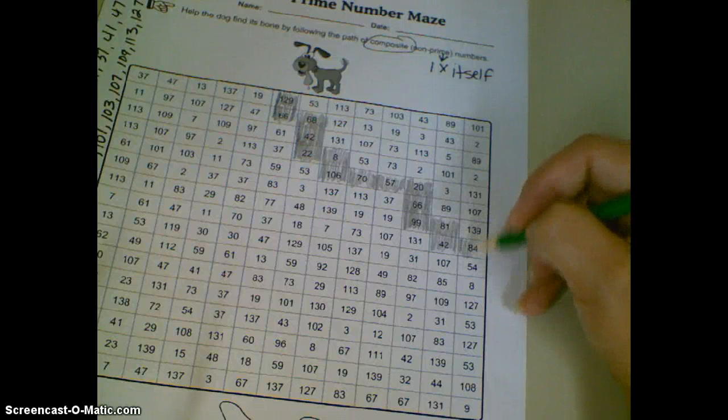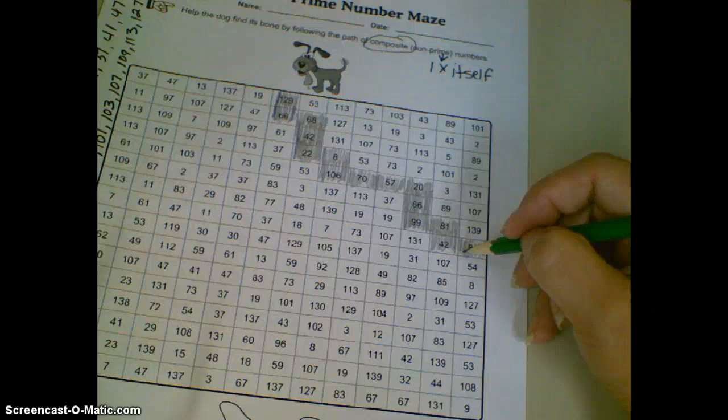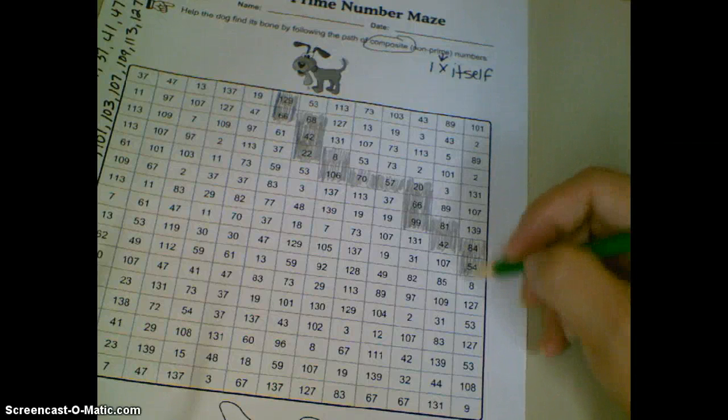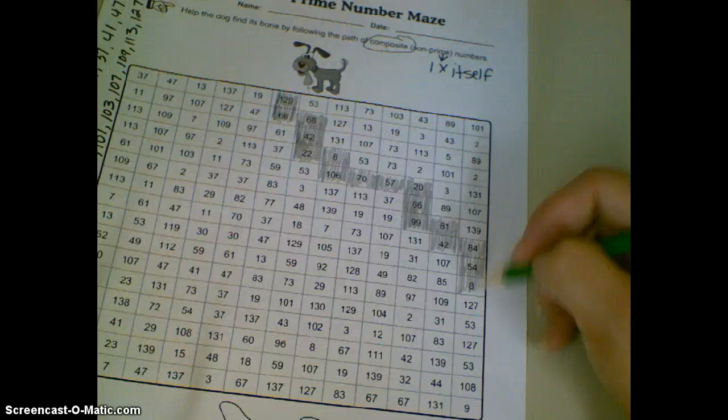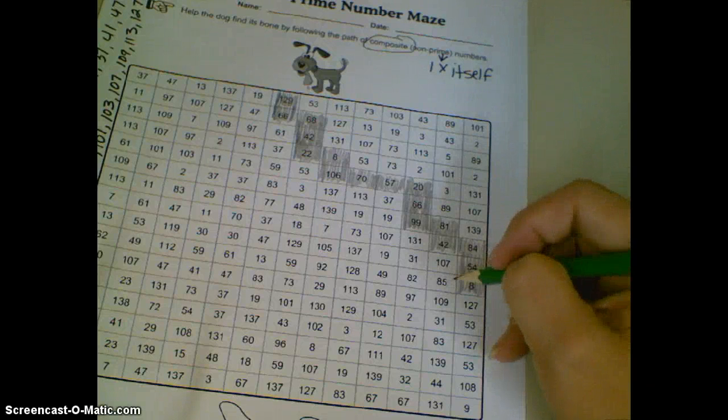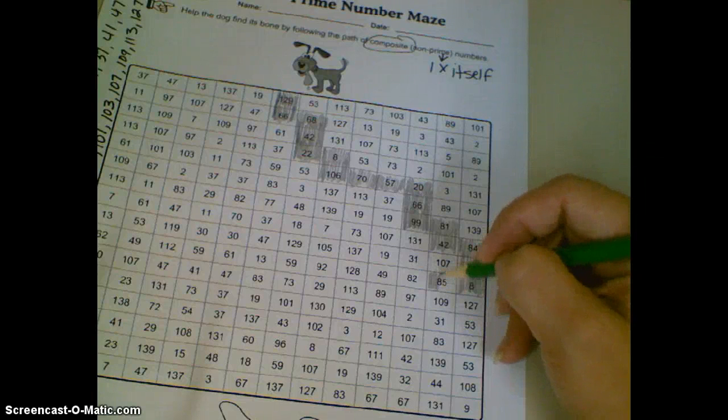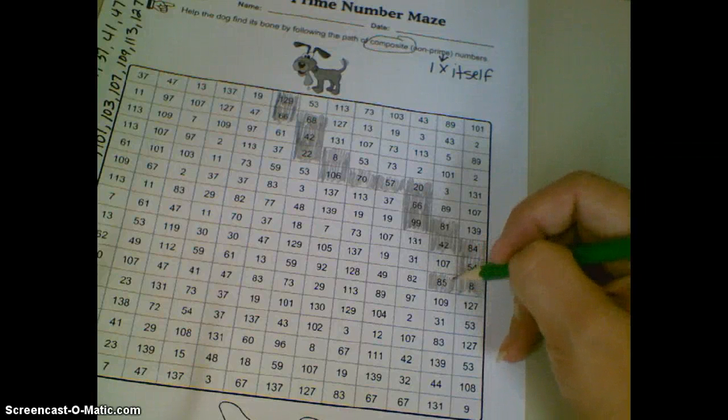Here's an even one, so we know. Another even one. Another even one, 8 times 4. This one is odd, but it's not composite. It ends in a 5, so we know it's divisible by 5.